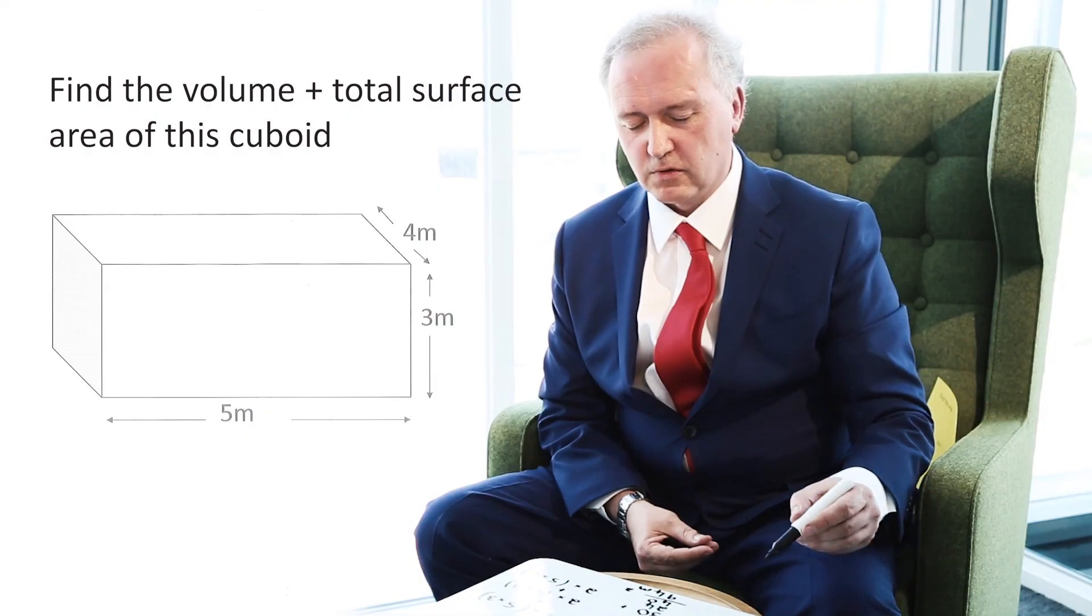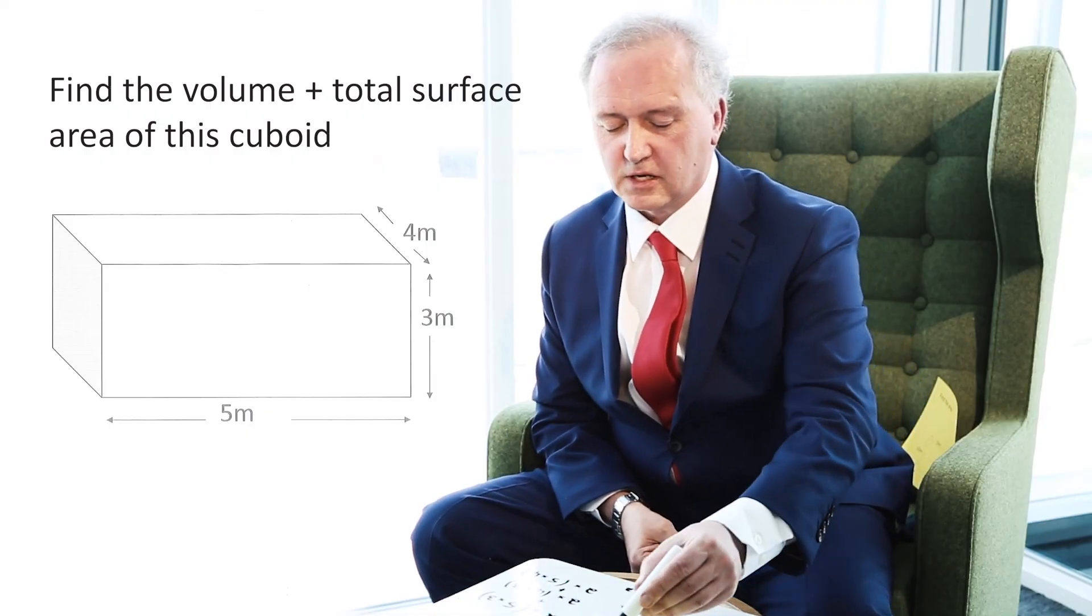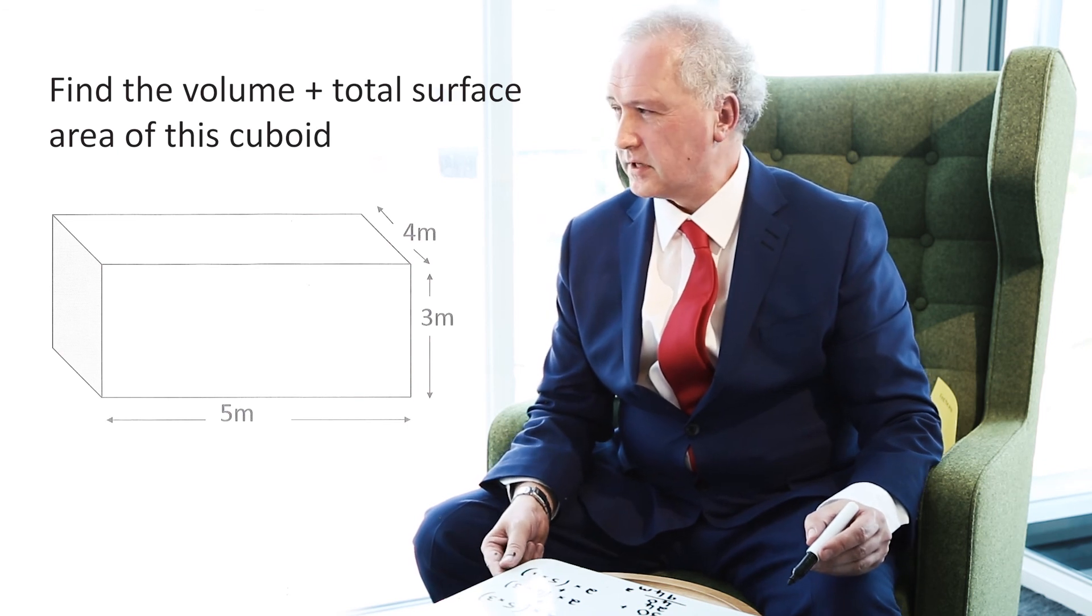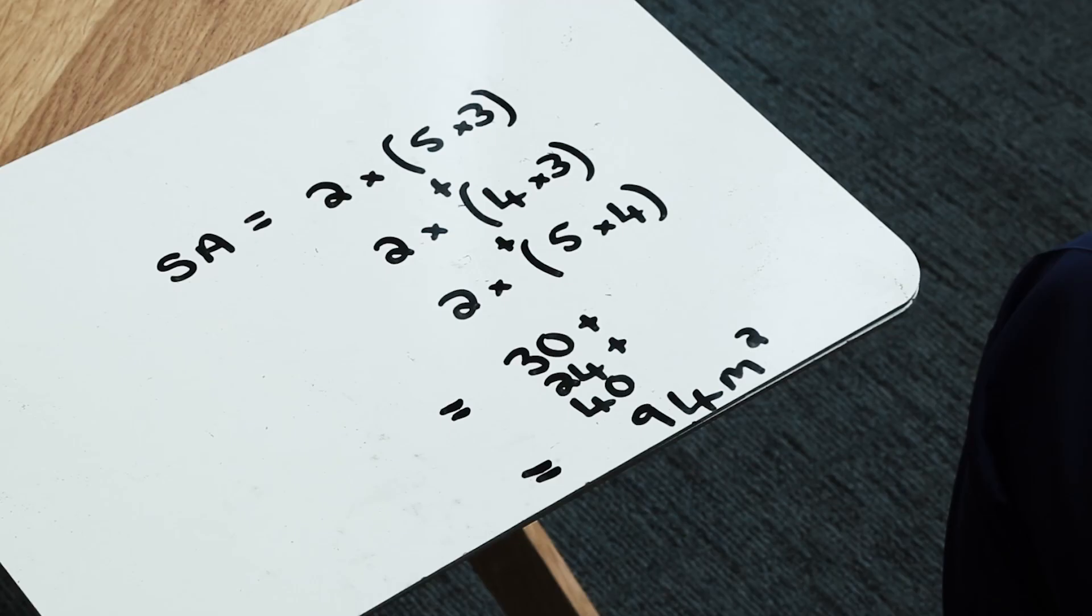So in summary, to work out the volume of a cuboid, it's very straightforward. You just multiply the base length times the height times the width. Really straightforward. The surface area, we need to be careful because we're looking at the total surface area.